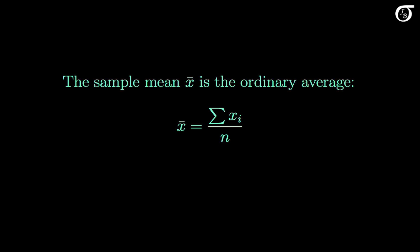The sample mean x bar is just the regular old ordinary average. We add up all of the observations and divide by the number of observations. This is the arithmetic mean, as opposed to other kinds of means like the harmonic mean or geometric mean.